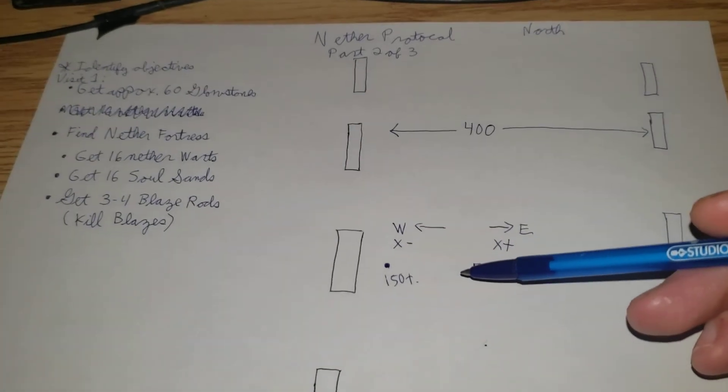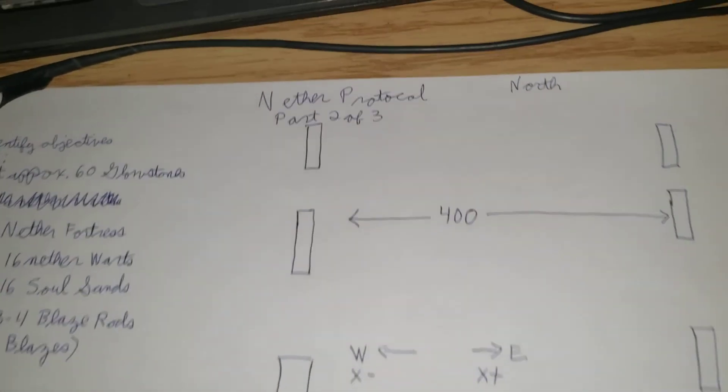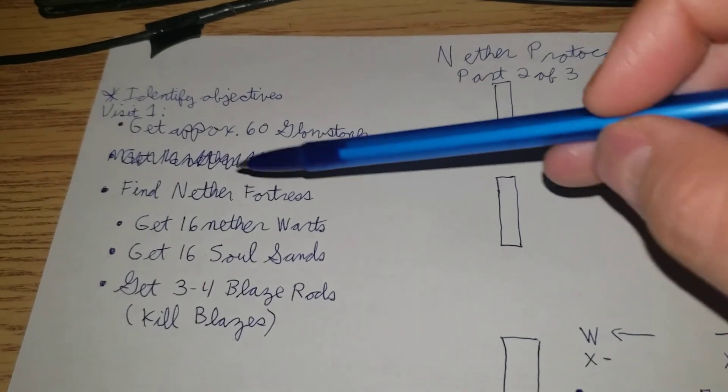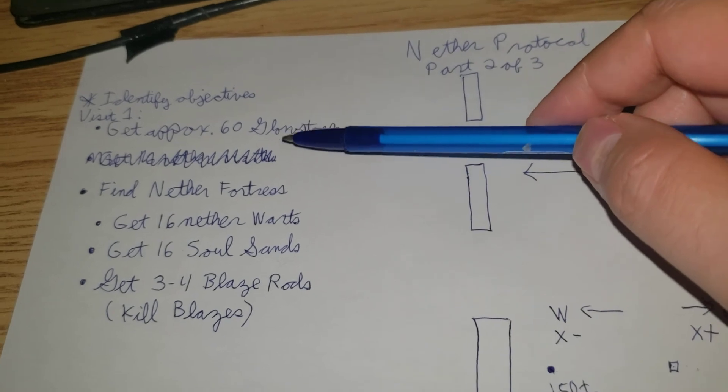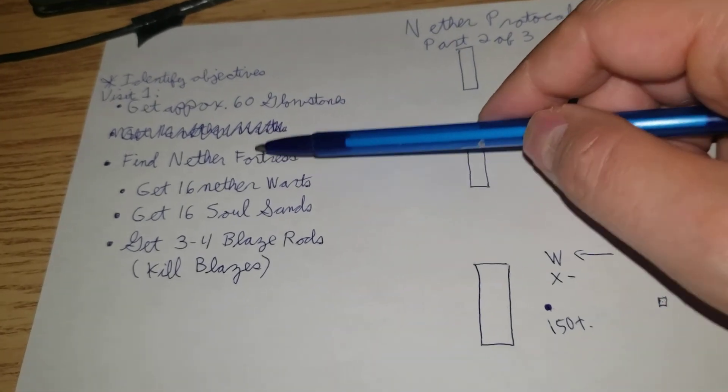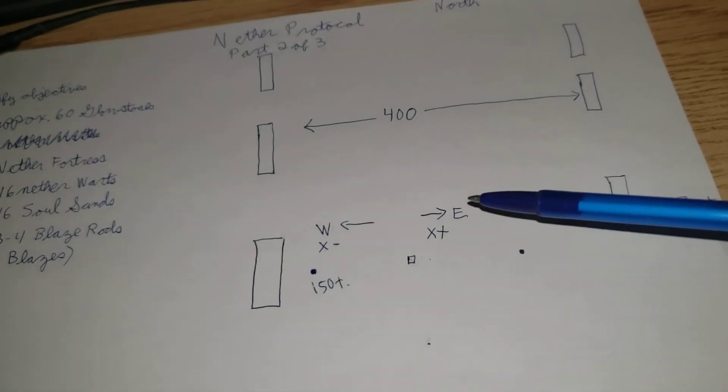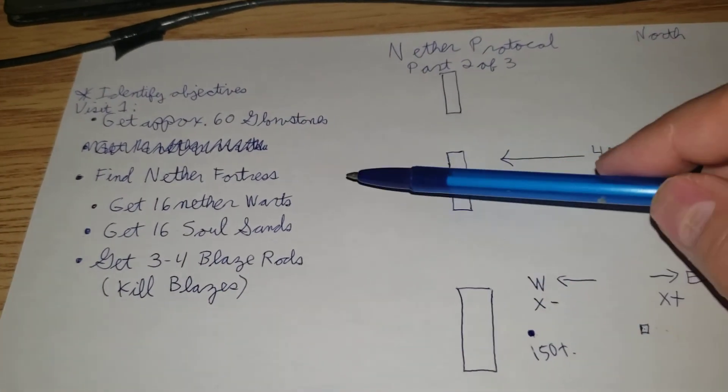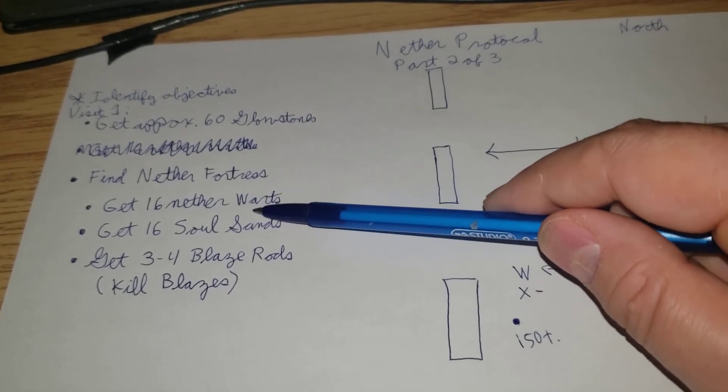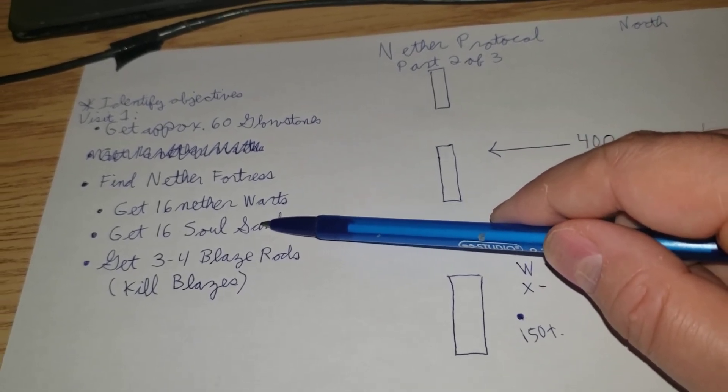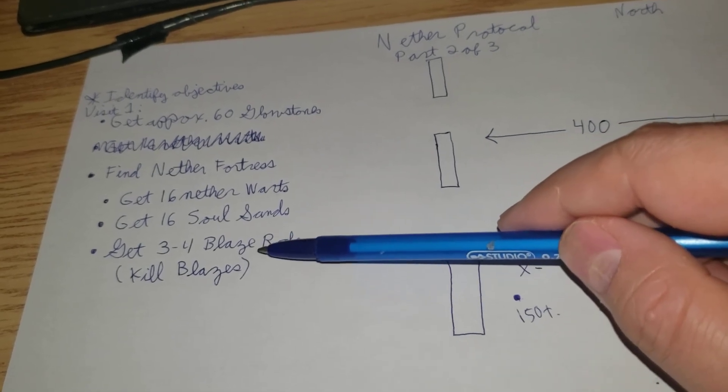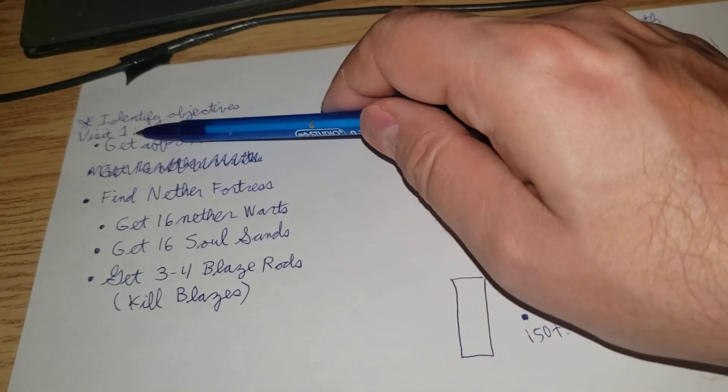And then you find the nether fortress and you're happy. So this was the nether protocol part two of three. Remember, identify objectives. Get approximately 60 glowstones. Find a nether fortress using this method. And inside the fortress, you're going to need to get 16 nether warts, 16 soul sands and three to four blaze rods. And this is for the first visit.